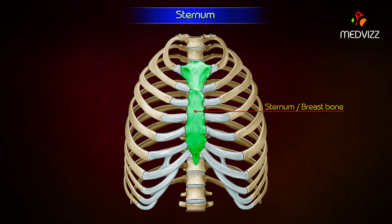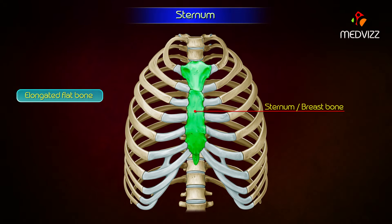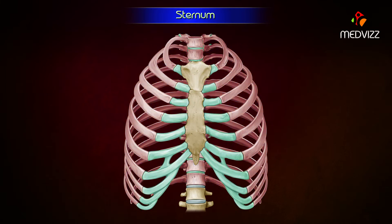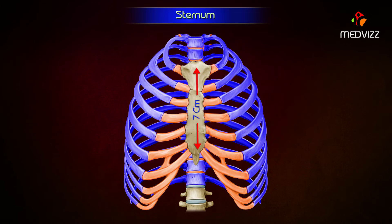Sternum. The sternum or breast bone is an elongated flat bone which lies in the anterior median part of the chest wall. It is about seven centimeters long.